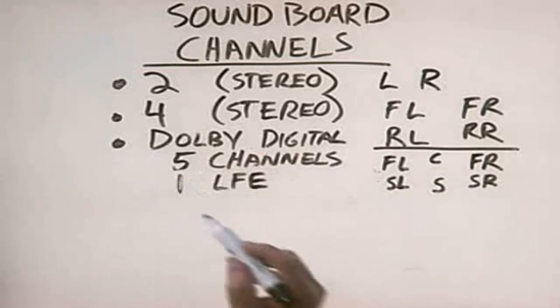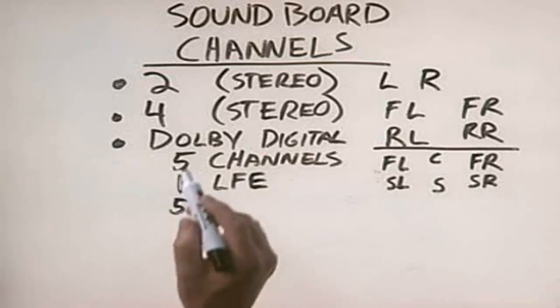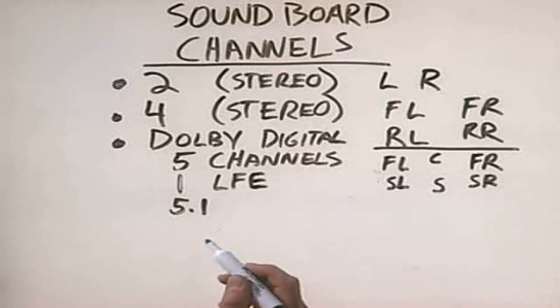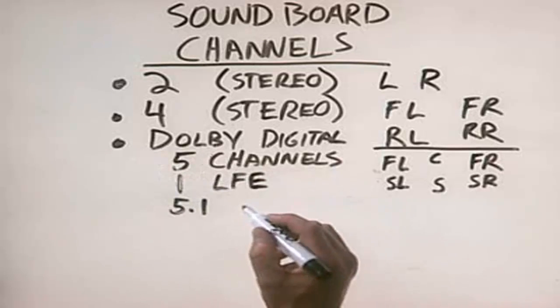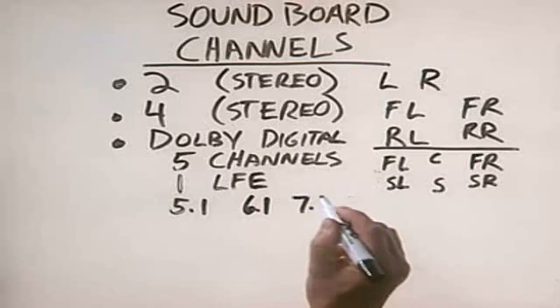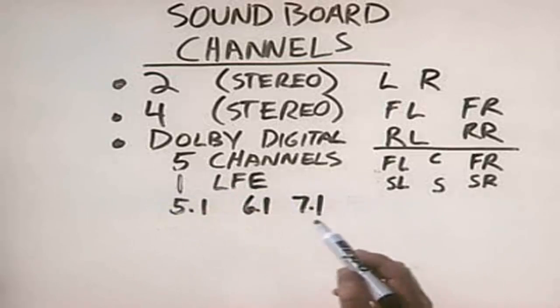Together, this Dolby Digital standard is called Dolby 5.1 because we have five full-bandwidth channels and one LFE channel. There's also several other Dolby Digital implementations. There's Dolby Digital 6.1. There's Dolby Digital 7.1. The only difference is the number of channels being used to recreate the sound.